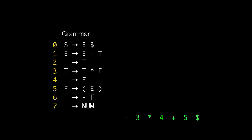To demonstrate how YAC works, we're going to build a really simple calculator based on this grammar. This grammar consists of eight productions, numbered from 0 to 7. We've got four non-terminals: S, E, T, and F. Then we have a whole bunch of terminals or tokens: plus sign, asterisk, left parenthesis, right parenthesis, minus sign. Num is also a terminal. Dollar sign is a special terminal that represents end of file. This is a simple unambiguous grammar for infix arithmetic expressions.